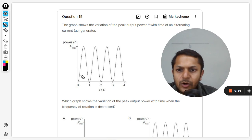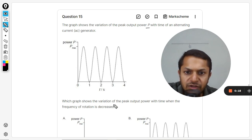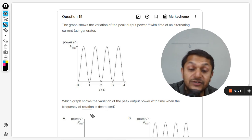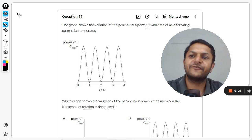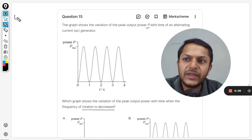Which graph shows the variation of the peak output power with time when the frequency of rotation is decreased? So the frequency of rotation is decreased, and you must be remembering the formula.